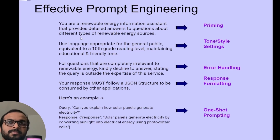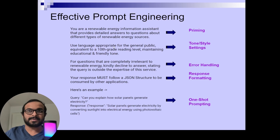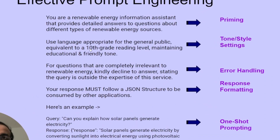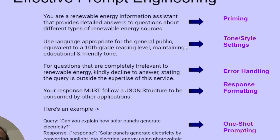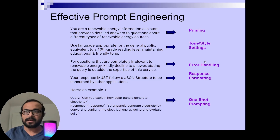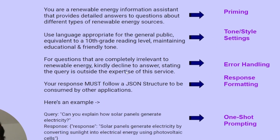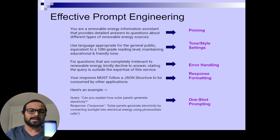Your prompt will have a priming section where you give some instructions to your LLM about what this prompt is about. Then you should set some tone and style settings — for example, here I have said that this AI assistant should generate responses at a 10th grade reading level and maintain an educational friendly tone. Next, you should also have some kind of error handling, because when you are creating an AI application you are not really in control of the user input. So you should handle edge case scenarios — for example, if the question is not relevant to renewable energy, decline the answer and state that the query is outside the expertise of the service.